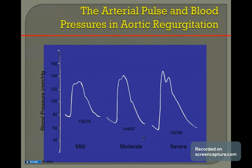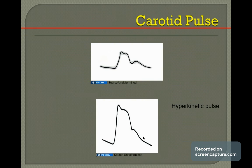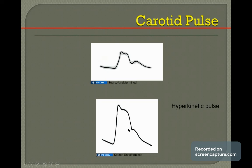The arterial pulse and blood pressure in aortic regurgitation show a characteristic pulse. The ascending limb is high, meaning the volume of the pulse is good, and it is sustained. There is a dicrotic notch and it goes rapidly down — this is called a hyperkinetic type of pulse. Everything will be hyperkinetic in this condition, and this hyperkinetic pulse occurs in every pulse, not just the radial or carotid.